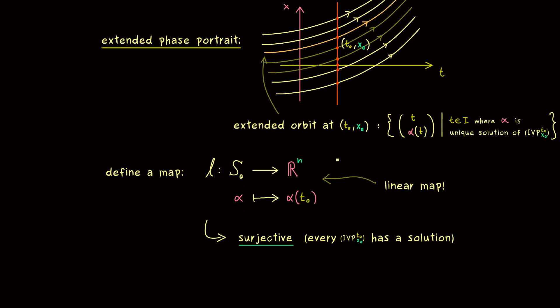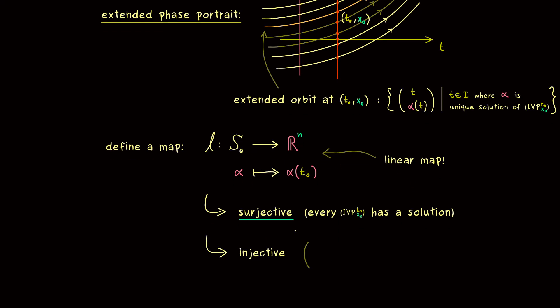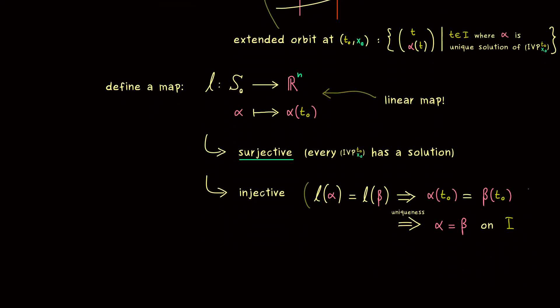But on the other hand, the map l is also injective because we have the uniqueness. Just assume that l(alpha) is equal to l(beta). And then we get alpha(t_0) is equal to beta(t_0). Which simply means that they satisfy the same initial value problem. And now since we have the uniqueness, so there are no crossings of orbits in the picture, they actually describe the same orbit. Hence the uniqueness implies that alpha and beta are actually the same on the whole interval I. And now you see, this is exactly the injectivity of the map l. The same images are only possible with the same input.